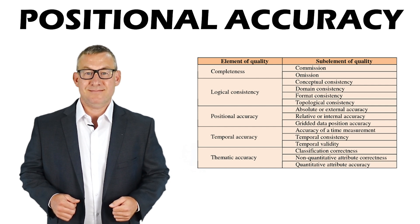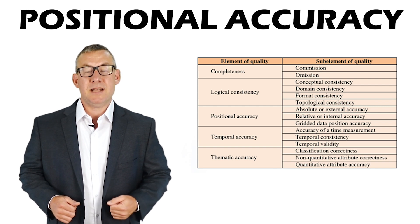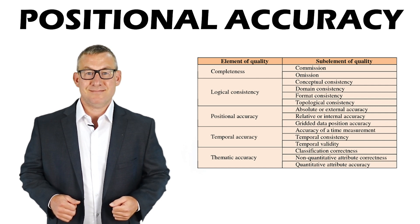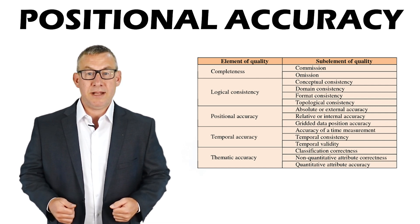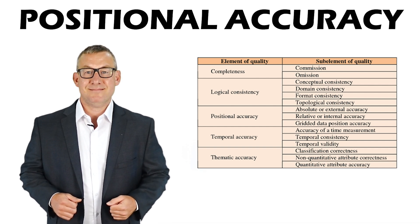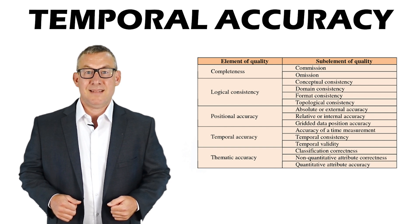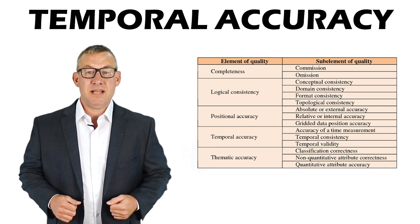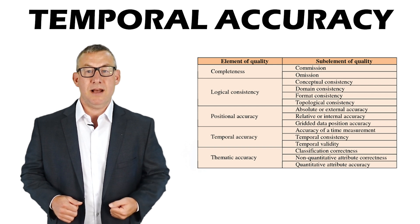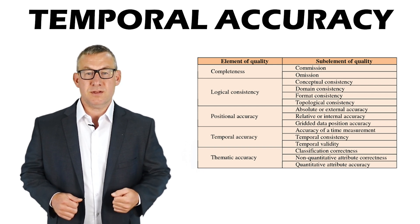Positional accuracy is how close the locations correspond to the true values. Positional accuracy is also known as geometric accuracy. Temporal accuracy is how appropriate the time frames in which the data was measured are for the use of the project.